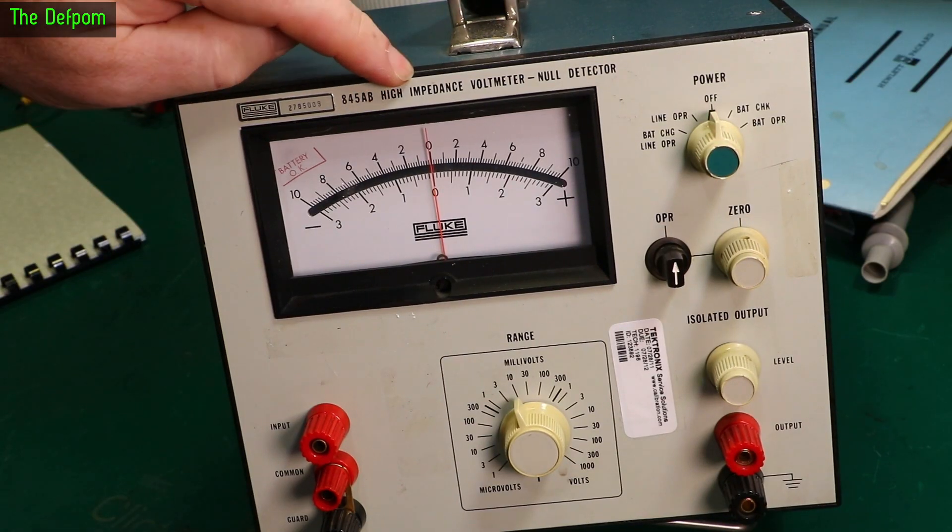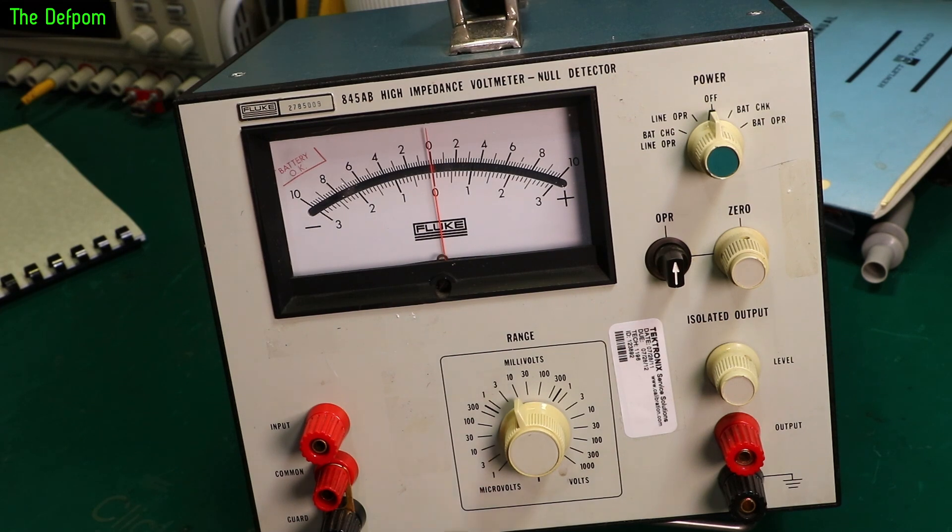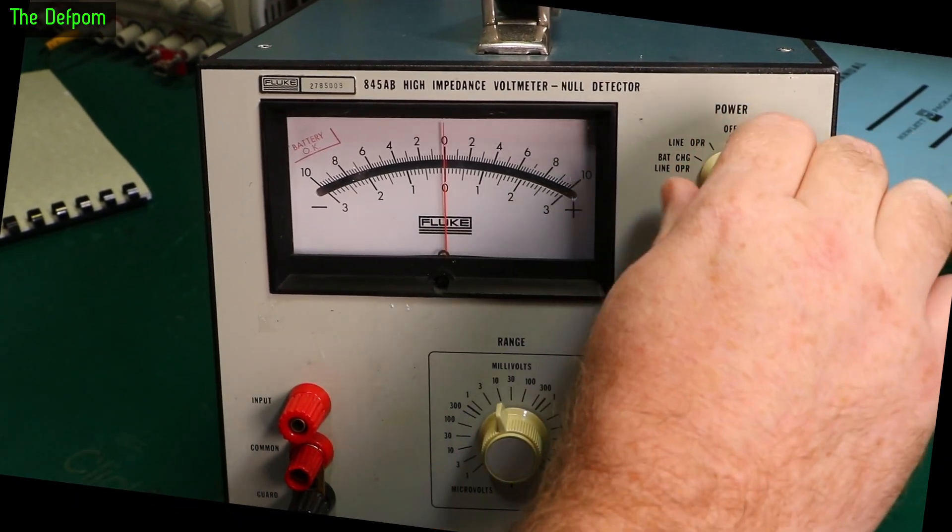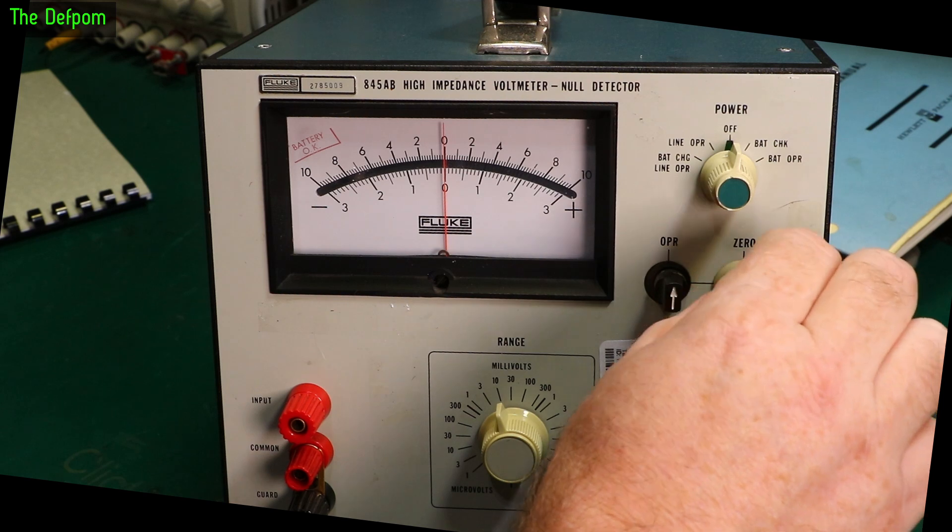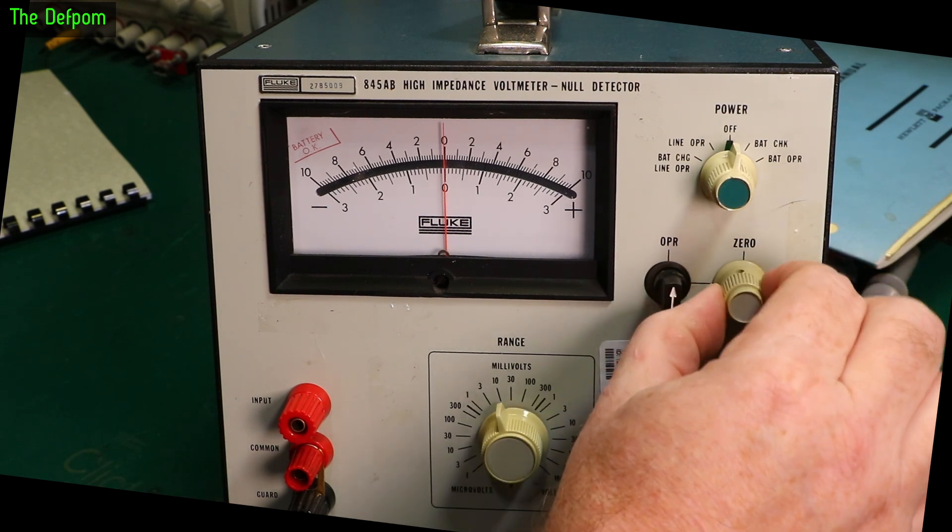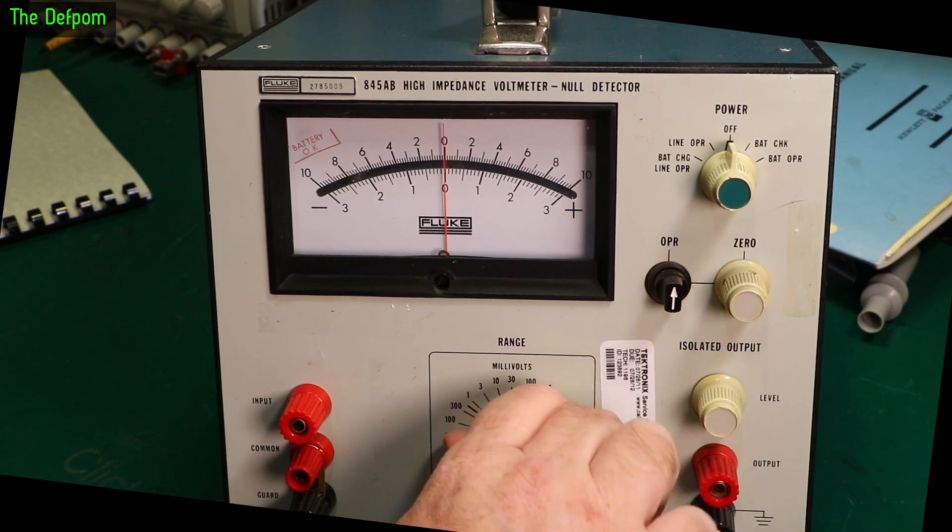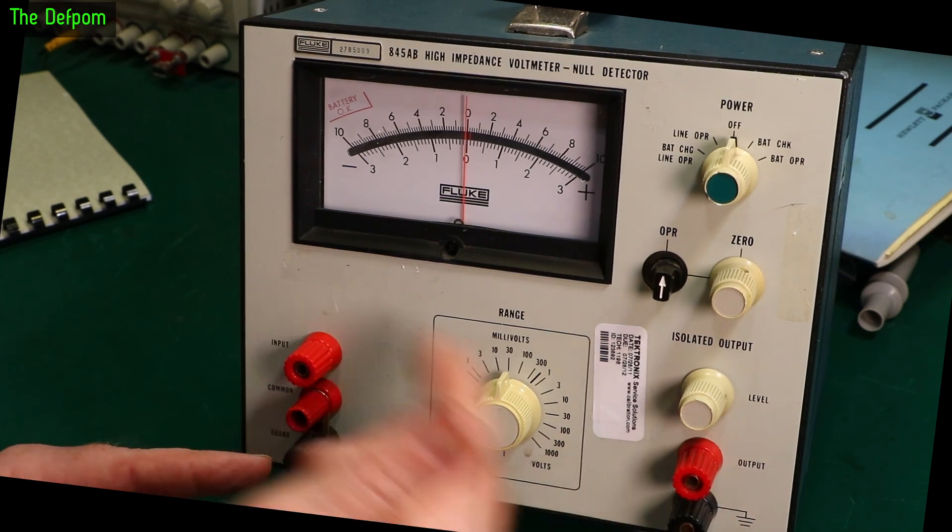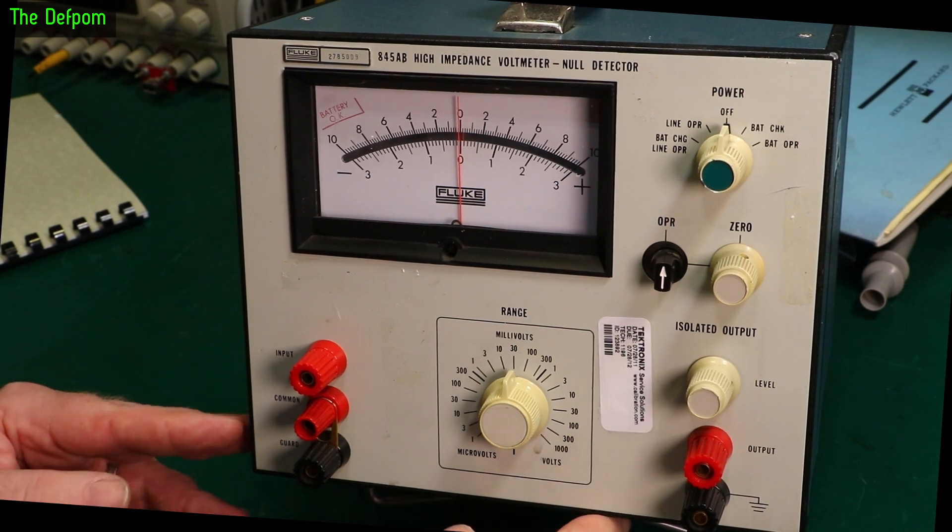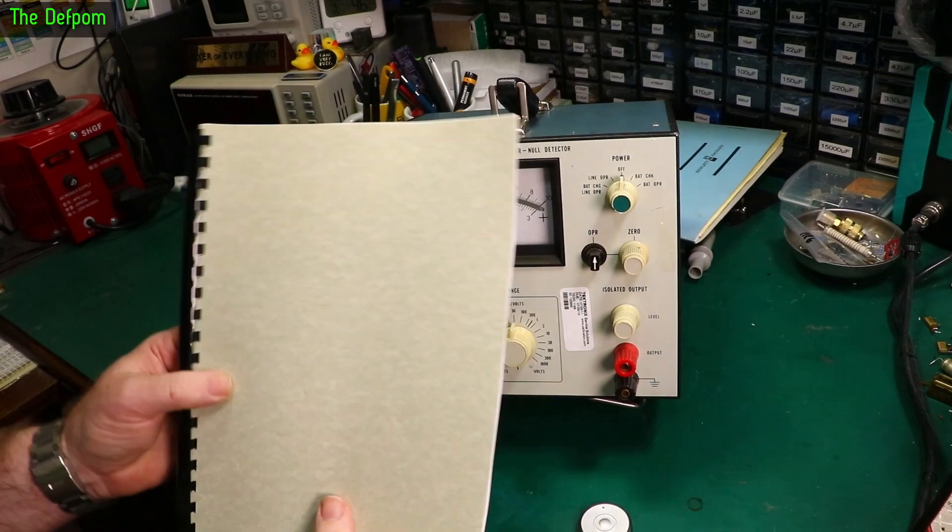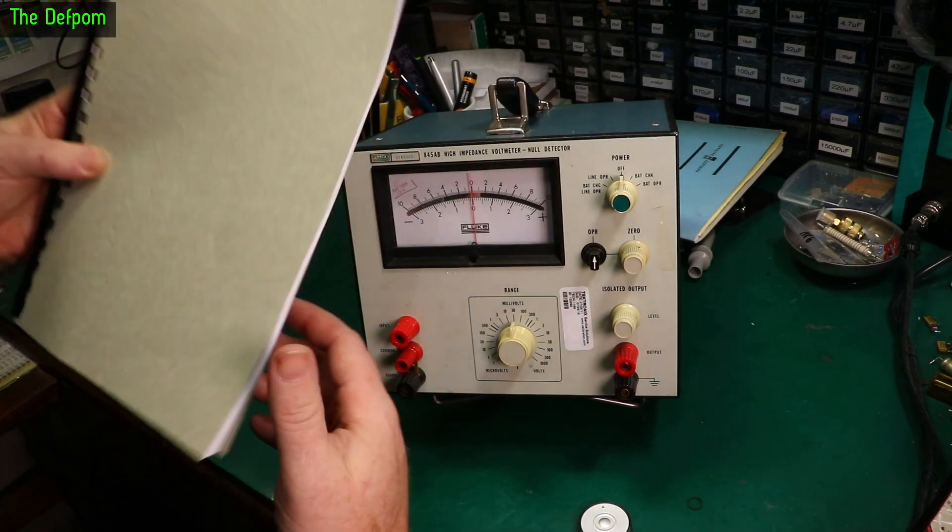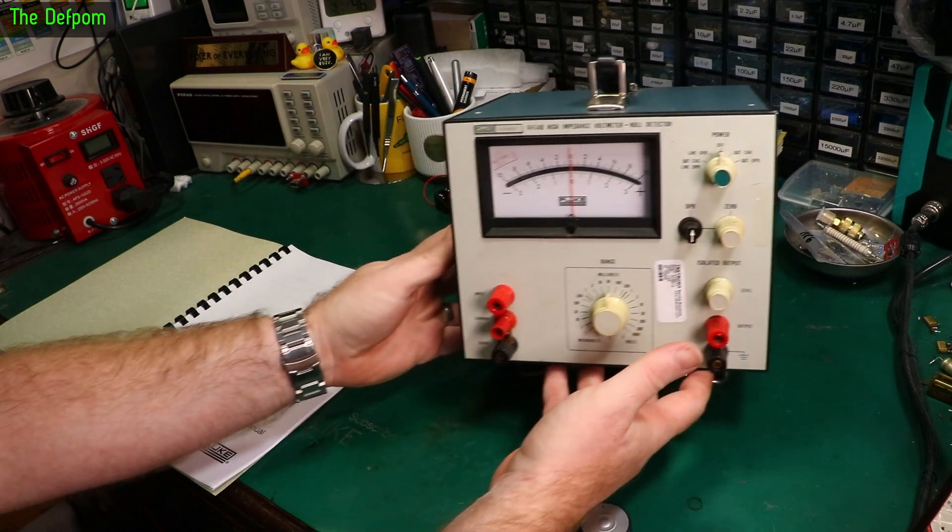It's an A45AB high impedance voltmeter and null detector. So it can go from one microvolt up to 1000 volts apparently. And it's got a battery operation thing as well which I doubt is even currently working. The battery if it's even in there it's probably dead. It's all slightly bent maybe. Or maybe not it's just wobbly. It's got the shorty bar on this one here. So you've got the input this side, output this side. Because I think it outputs a DC voltage or something relative to it. And it came with a manual.